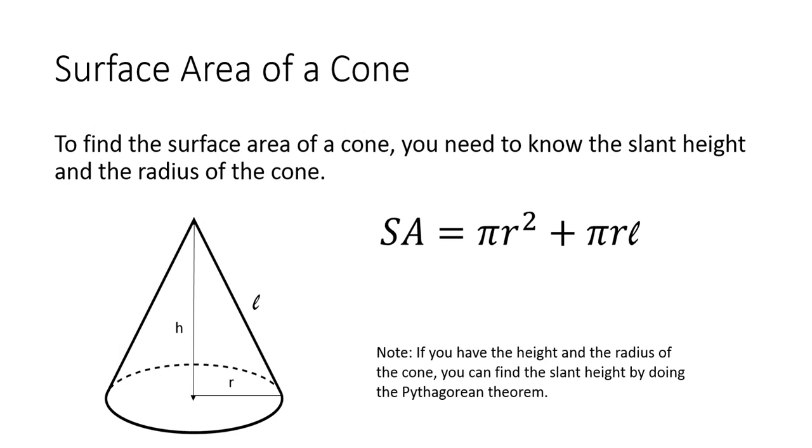So note, if you have the height and the radius of the cone, you can find the slant height by doing the Pythagorean theorem. So if you're only given the height, then you can use Pythagorean theorem to find the slant height.